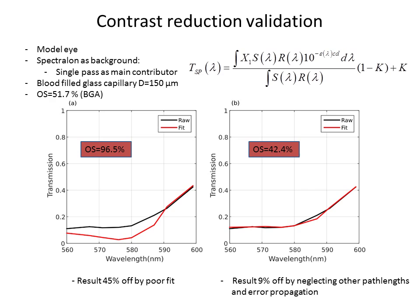The offset is probably because we are neglecting the other path lengths. Even if they are a minority, they will still have an effect. And also, we have the problem with error propagation.